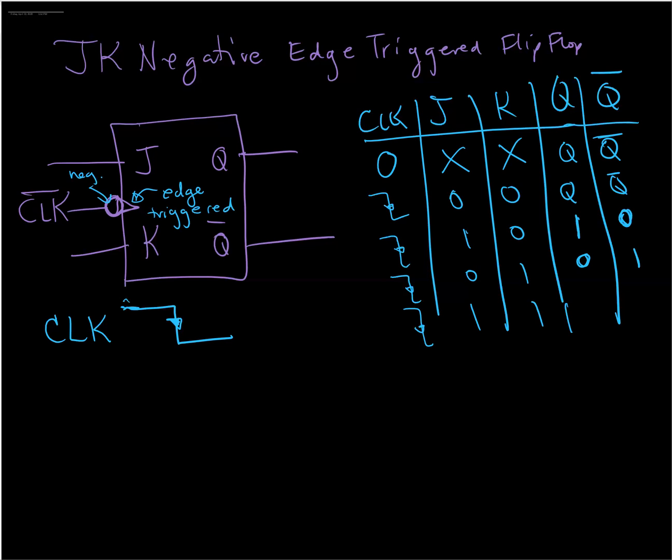This is an allowed state. This is called the toggle state. So Q will become Q bar and Q bar becomes Q. And what we mean by that is that the outputs are going to become the opposite of what they were. If they were high, they're going to become low. If they were low, they're going to become high.